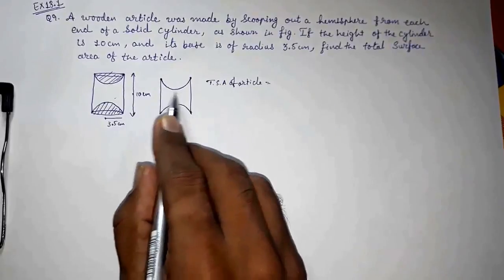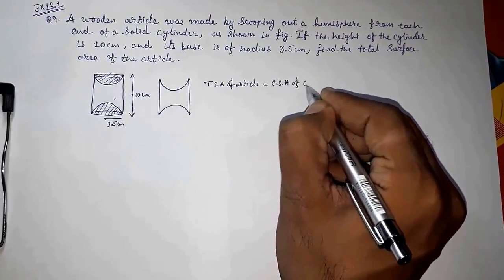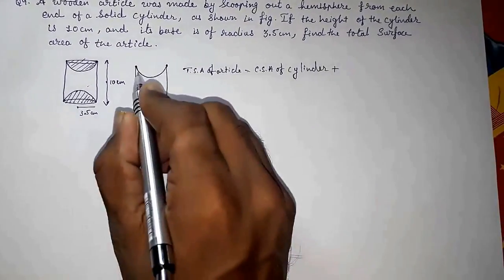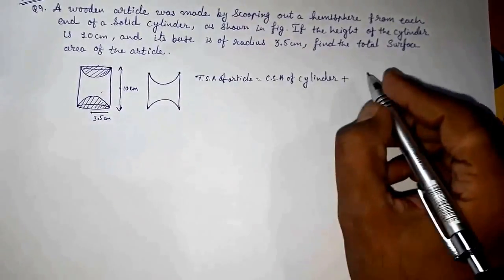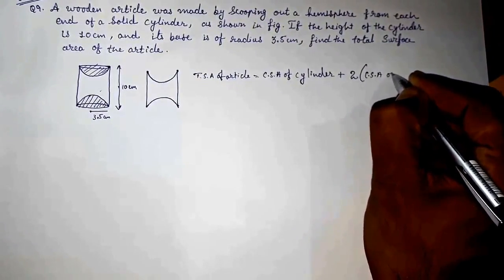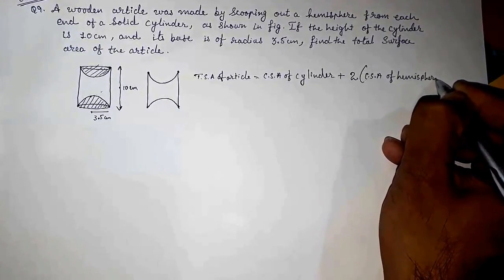We have to find the CSA of this cylinder, and then we have to add the CSA of these two hemispheres, means two CSA of hemisphere. We have to add this.